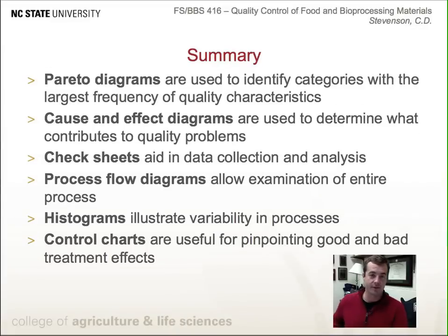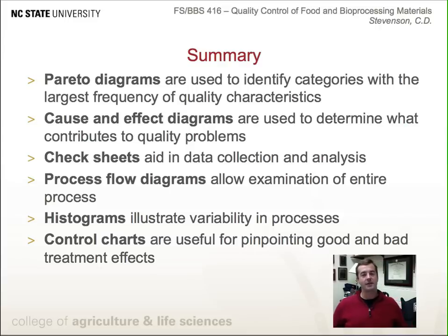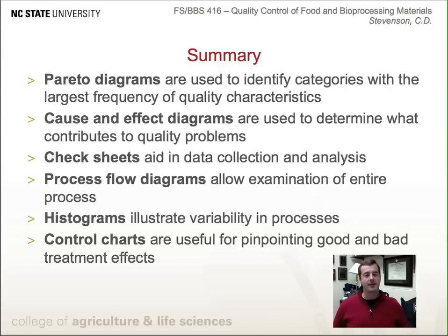This concludes this lesson. In summary: Pareto diagrams identify categories with the largest frequency of quality characteristics; cause and effect diagrams determine what contributes to quality problems; check sheets aid in data collection and analysis; process flow diagrams allow us to examine an entire process; histograms illustrate variability in processes; and control charts are useful in pinpointing good and bad treatment effects.